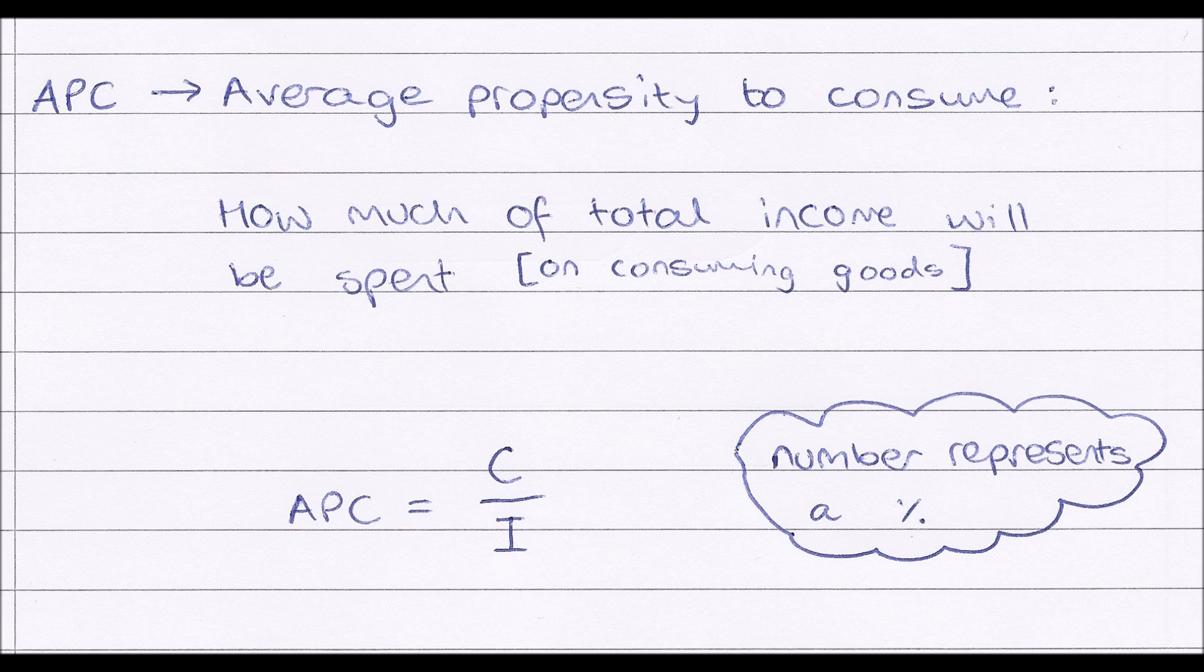Hello everybody and welcome to this macroeconomic video on propensities in macroeconomics. We have four propensities: average propensity to consume, marginal propensity to consume, average propensity to save, and marginal propensity to save. So firstly, our average propensity to consume or APC.